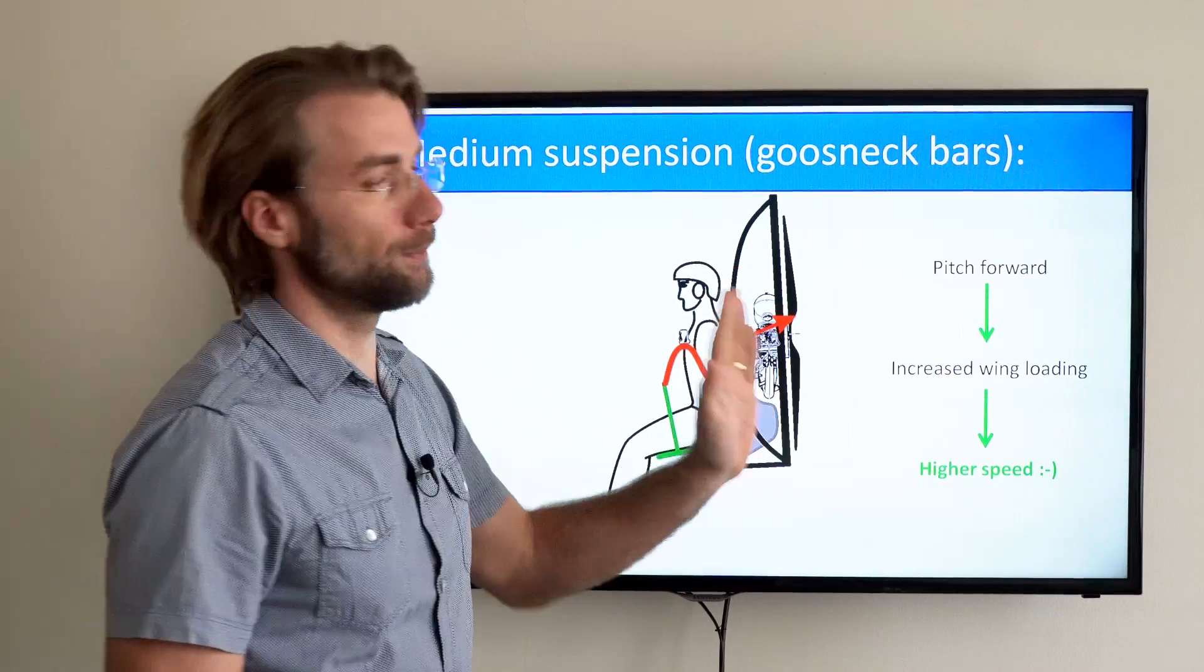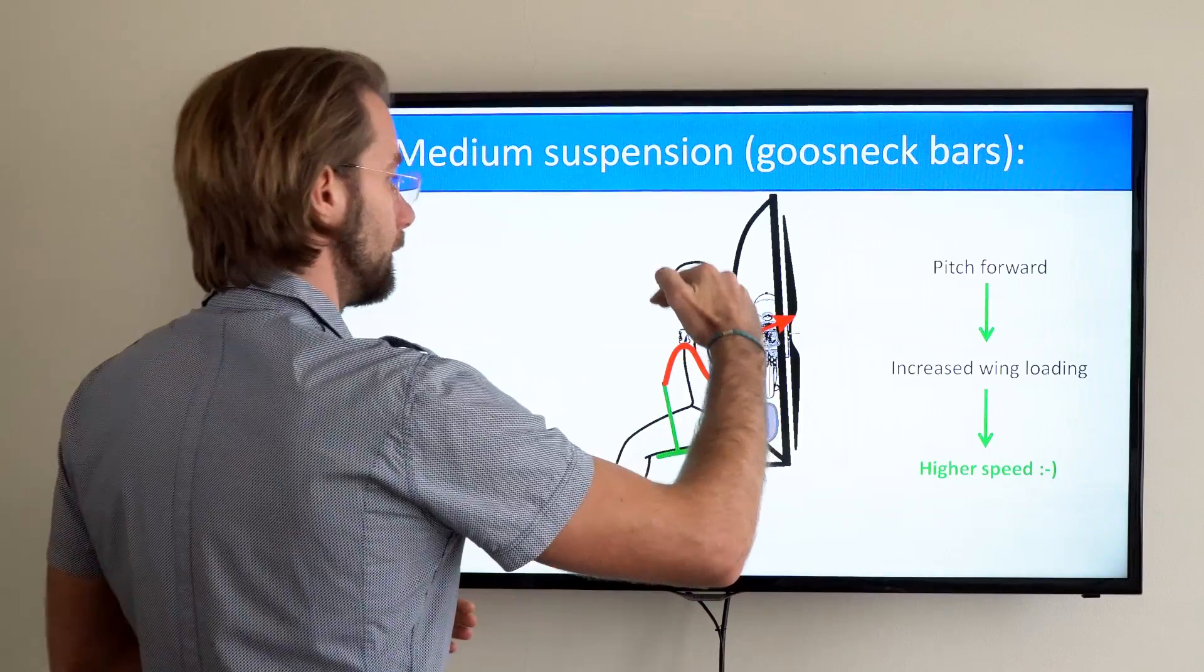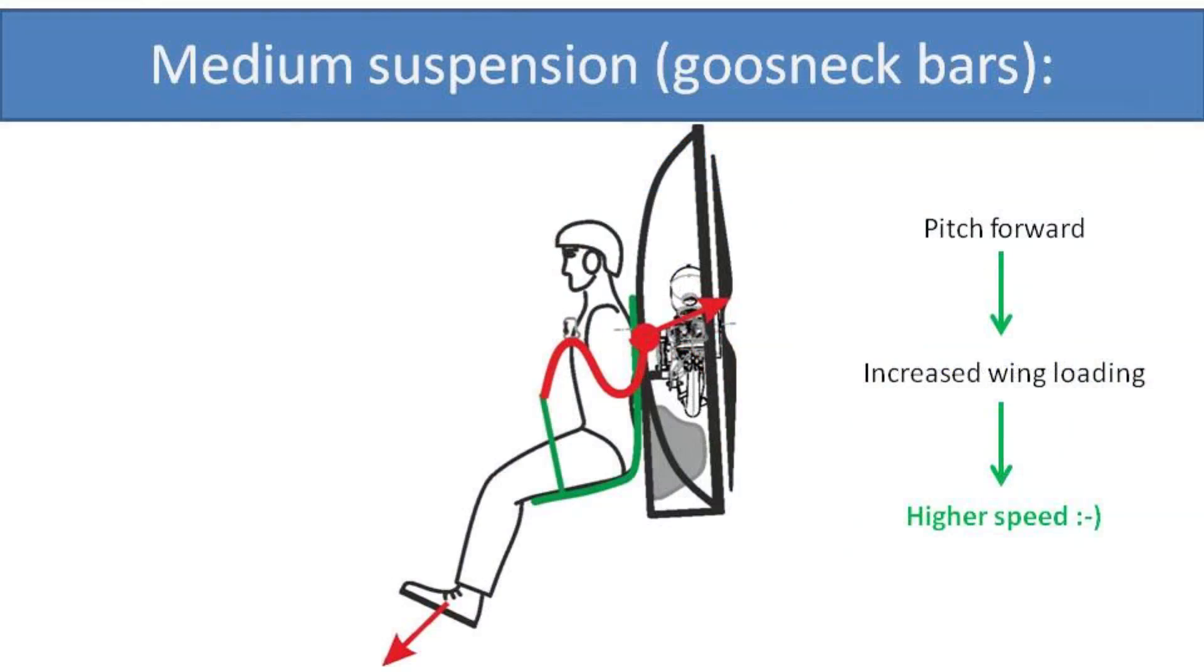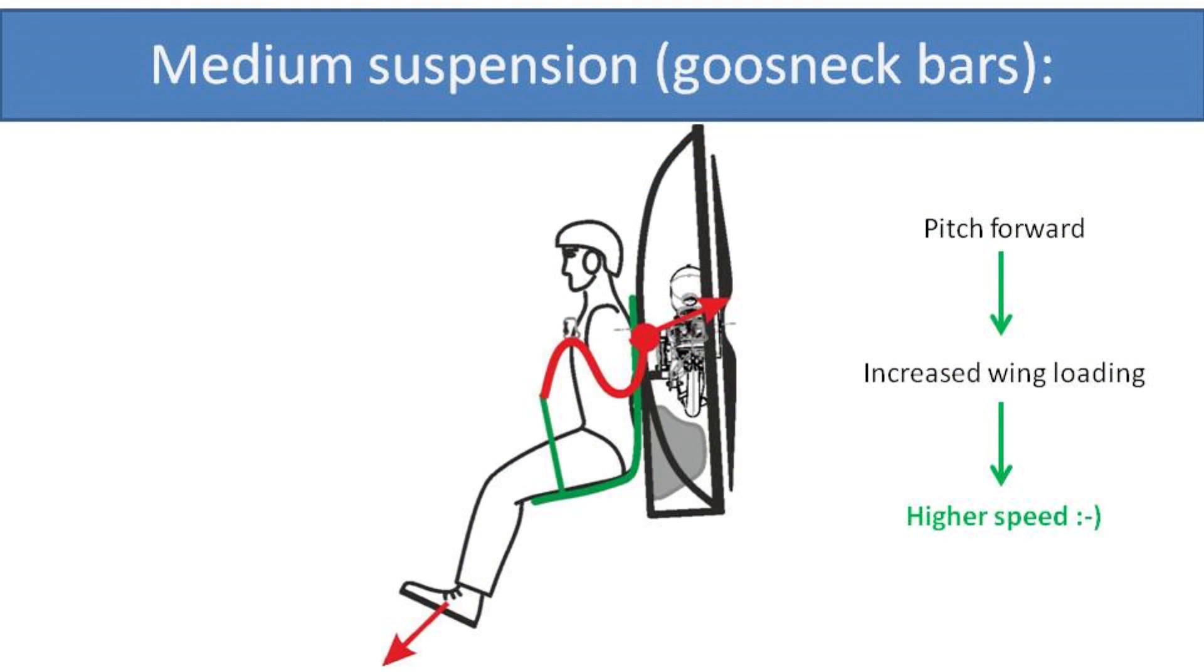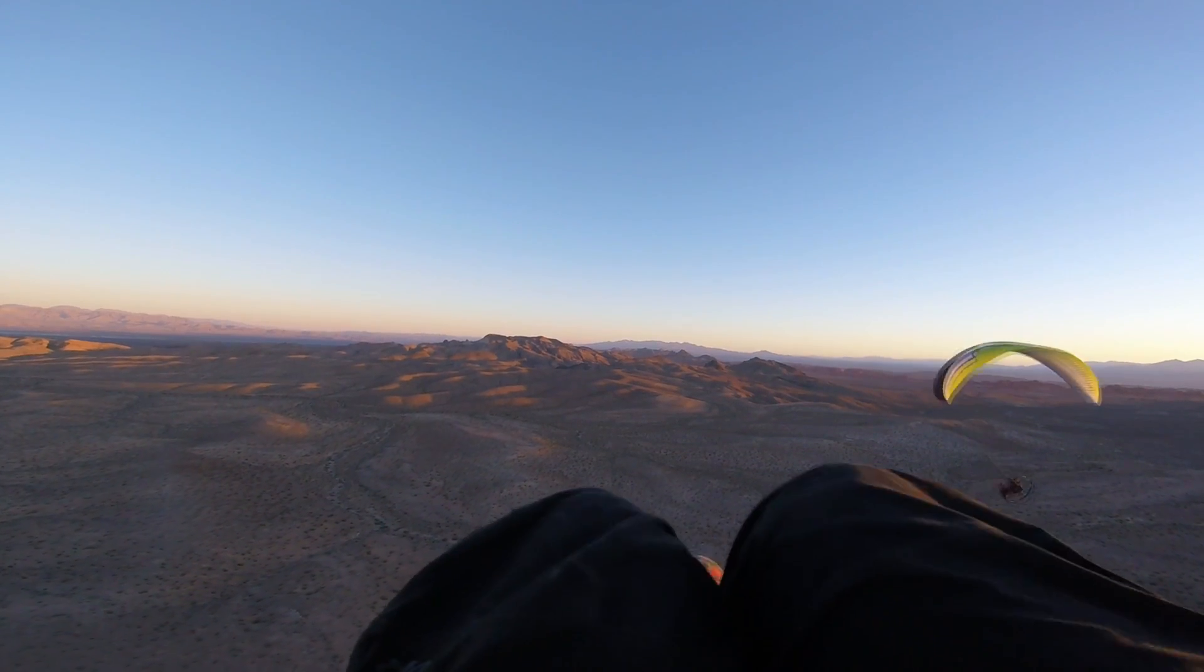So the prop will pitch forward. That means part of the thrust will push you down, increasing the wing loading, and with an increased wing loading you fly faster. This is actually what you want when pushing the speed bar. It's good.